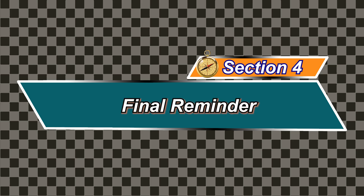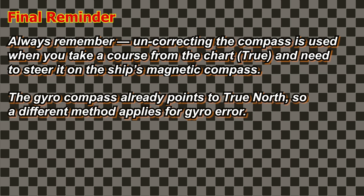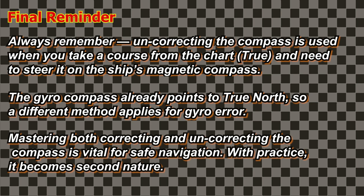Section 4: Final Reminder. Always remember, uncorrecting the compass is used when you take a course from the chart — true — and need to steer it on the ship's magnetic compass. The gyro compass already points to true north, so a different method applies for gyro error. Mastering both correcting and uncorrecting the compass is vital for safe navigation. With practice, it becomes second nature.